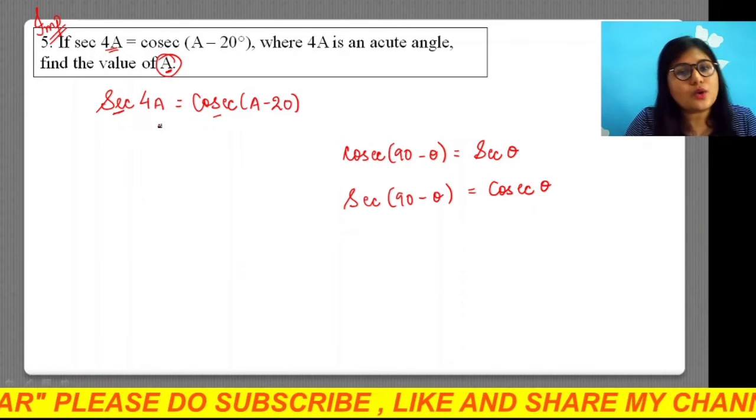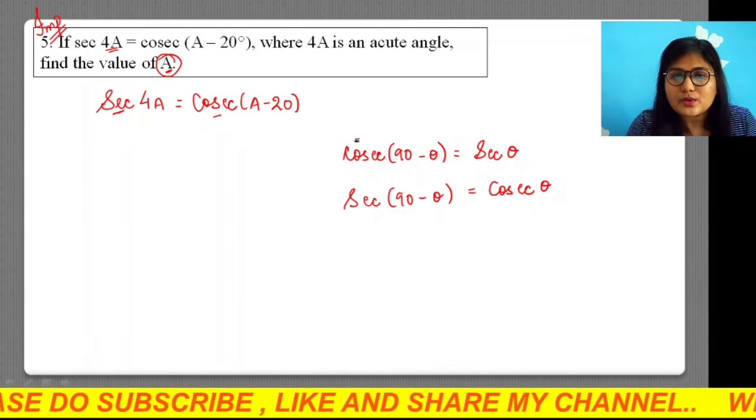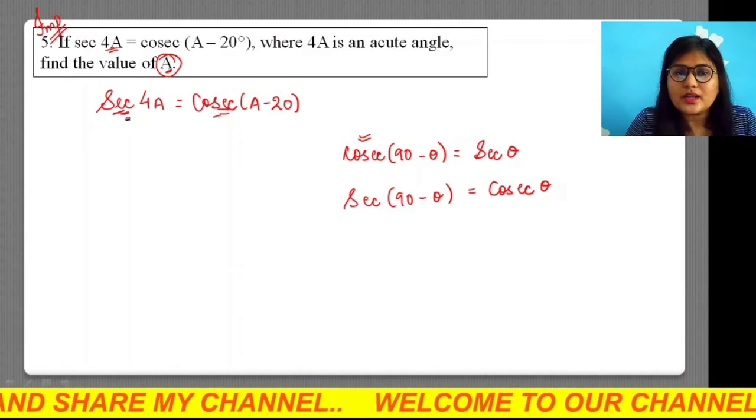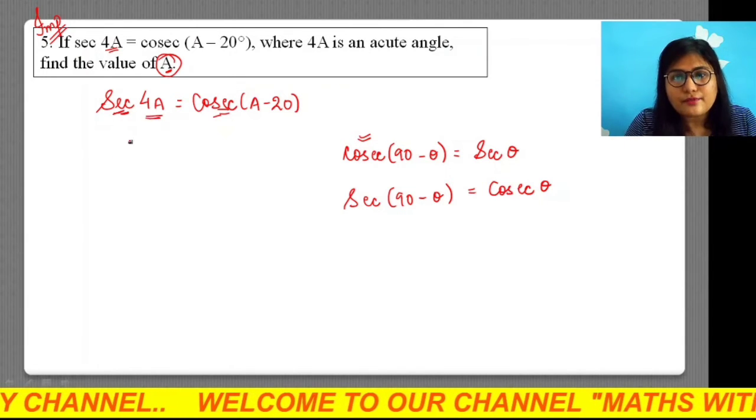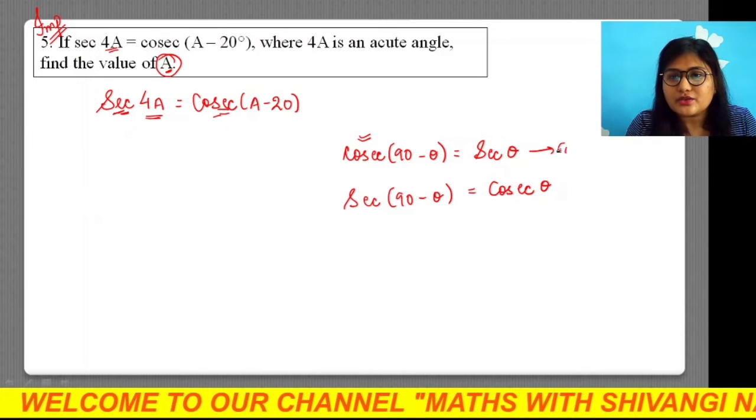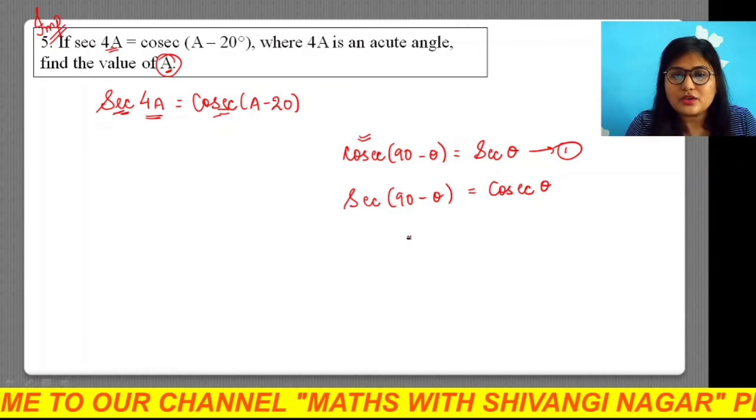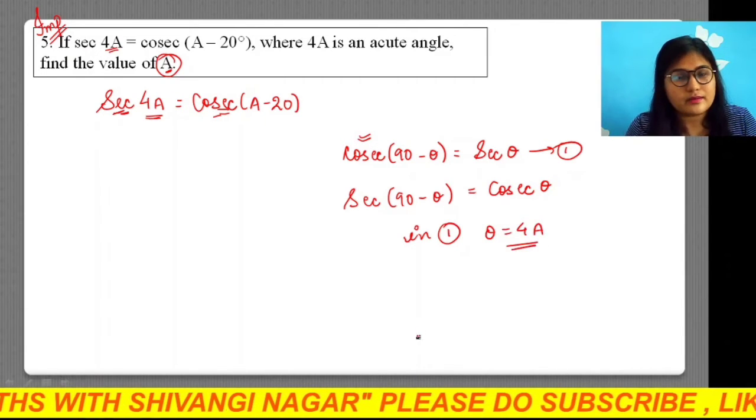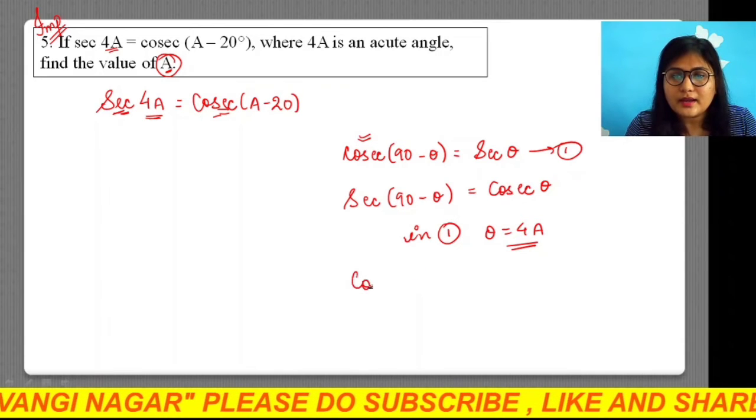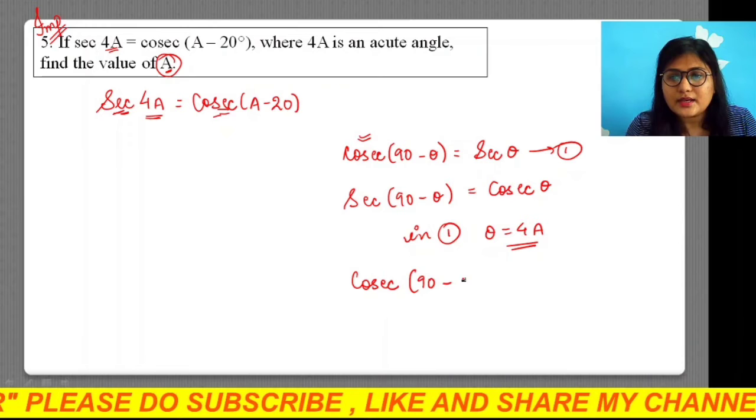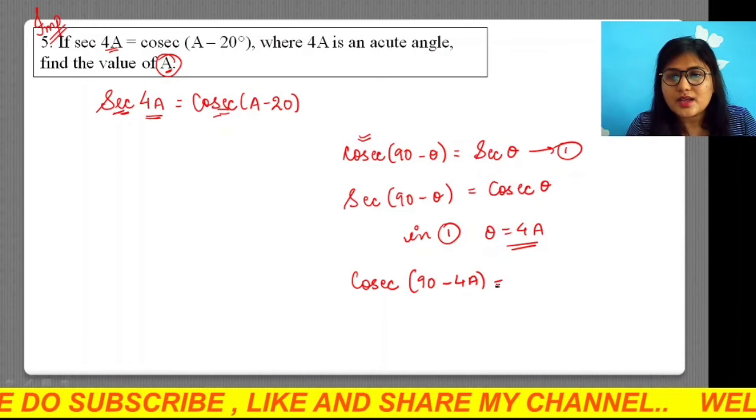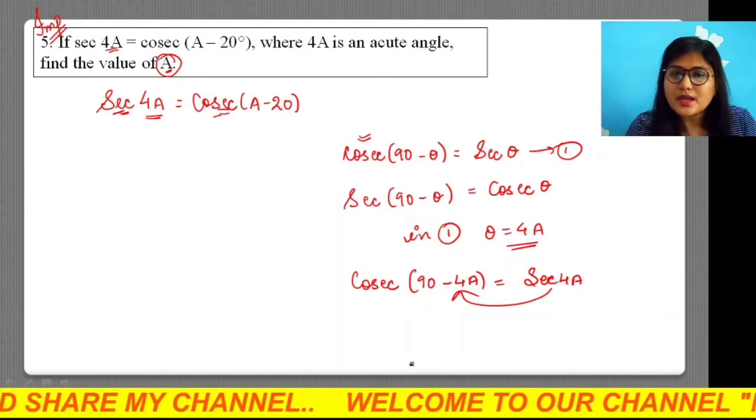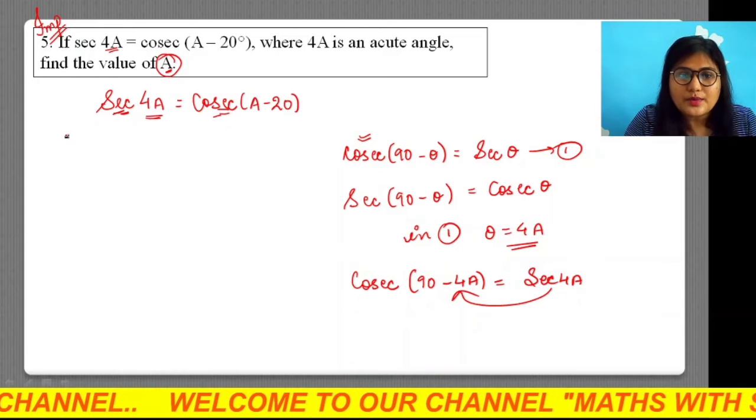We can convert sec into cosec using this relation. I am converting sec 4A into cosec form. Consider the first relation, if we put θ equals 4A, we will get cosec (90° - 4A) equals sec 4A. So sec 4A can be written as cosec (90° - 4A).